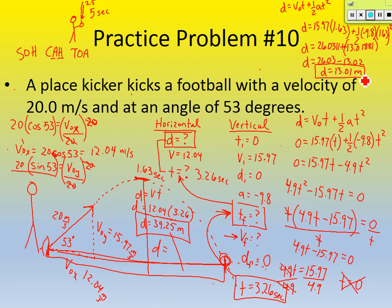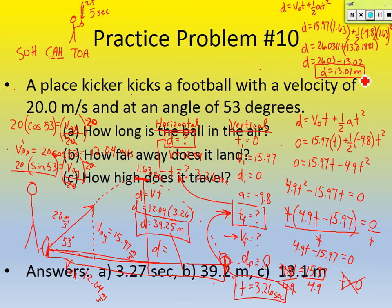Let's check if we got these right. Part A was 3.27 — we got 3.26, close enough. Part B was 39.25 — correct. Part C was 13.1 — which is what we got. A lot of work, but kind of interesting that we can determine all of that. Pretty cool.